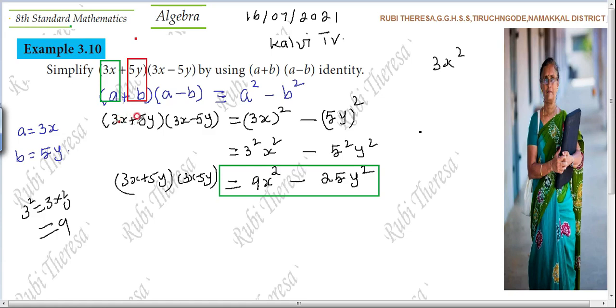2x plus 3y, very good, 2x plus 3y into 2x minus 3y. Those who are able to see the answer directly you can say, because A plus B into A minus B, this is nothing but A squared minus B squared. A is nothing but 2x, B is nothing but 3y. That means what? 2 squared x squared. 2 squared is nothing but 4, so 4x squared. 3 squared is nothing but 9, 9y squared.